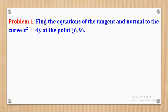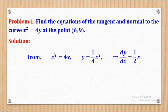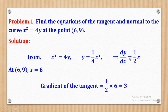We shall start with problem 1. It says: find the equations of the tangent and the normal to the curve X squared equal to 4Y at the point (6, 9). We are given the equation X squared equal to 4Y. We shall first make Y the subject to get Y equal to a quarter X squared. After that, we differentiate to get dy/dx equal to a half X. At the point (6, 9), X is equal to 6. Therefore, substituting into dy/dx gives the gradient of the tangent: a half times 6 equals 3. So 3 is the gradient of the tangent.